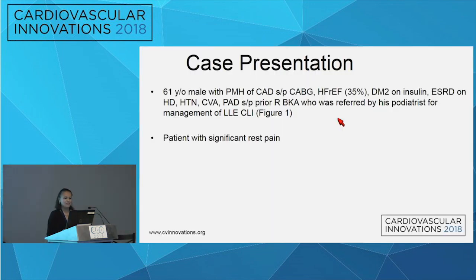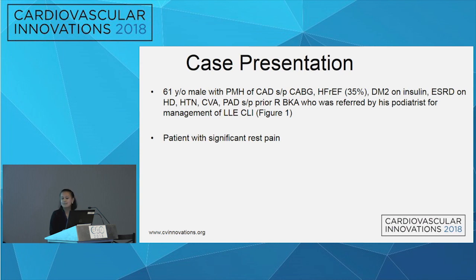Let's start off with the case. The gentleman is a 61-year-old male. He's got a history of coronary disease, heart failure with reduced ejection fraction, diabetic on insulin, end-stage renal, hypertensive, prior stroke, PAD, status post right BKA — so he's got all the risk factors.